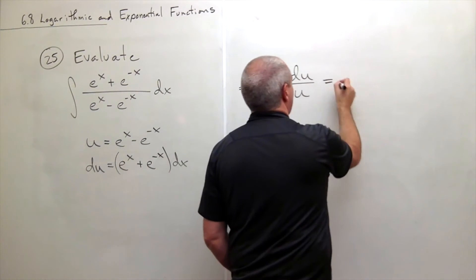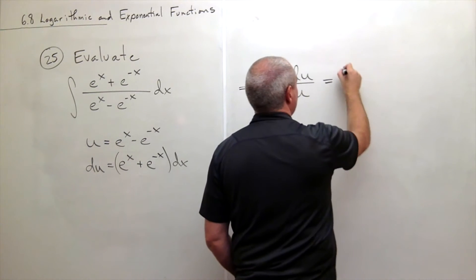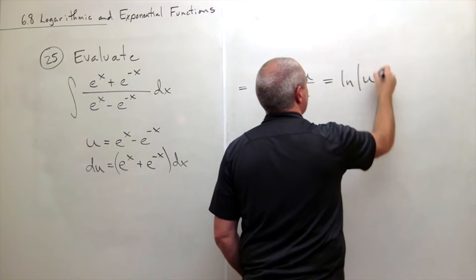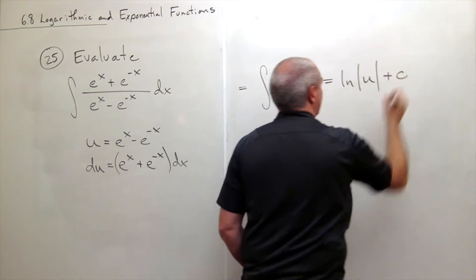Of course the anti-derivative of one over u is ln of the absolute value of u plus c.